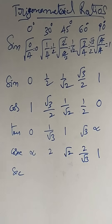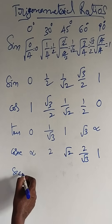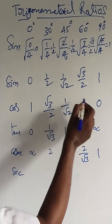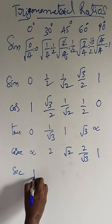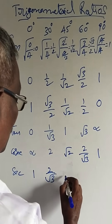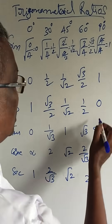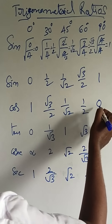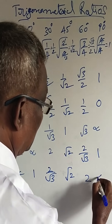Next, secant. Cos theta into secant theta is equal to 1, so secant theta is equal to 1 by cos theta. Simply reverse the cos values. 1 by 1 is equal to 1; 2 by root 3; root 2; 2; and this is 1 by 0, which means infinity.